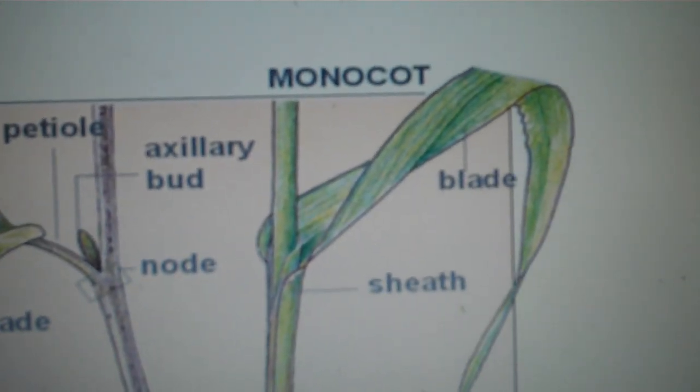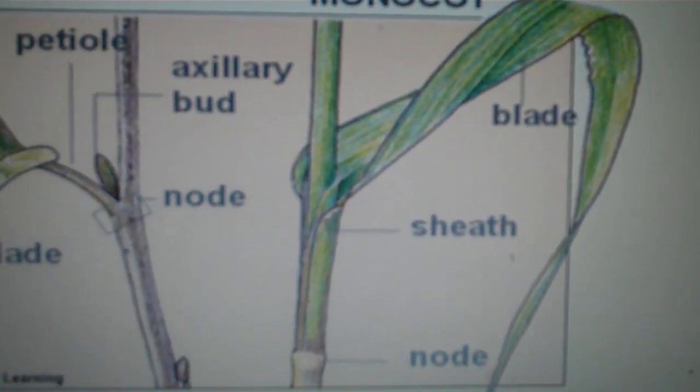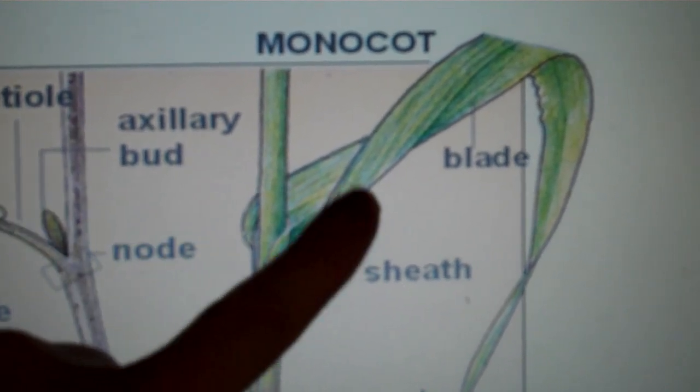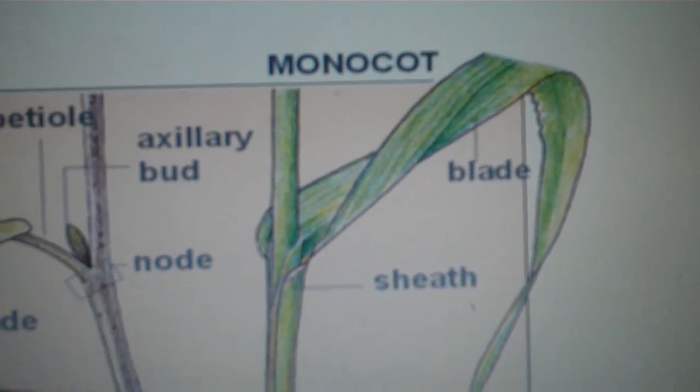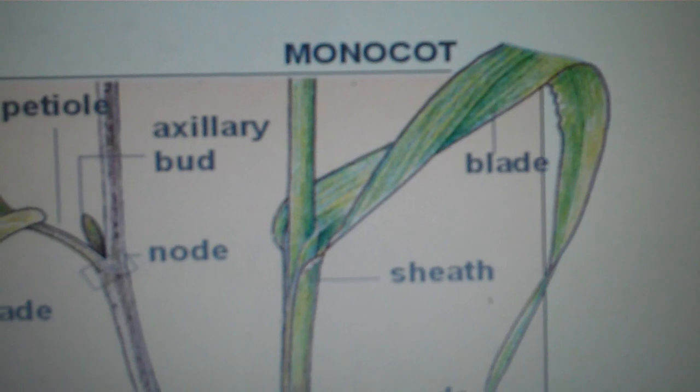In the monocot leaf structure, you'll notice that there is no petiole or node, and the blade often envelopes or wraps around the stem in what's called a sheath.